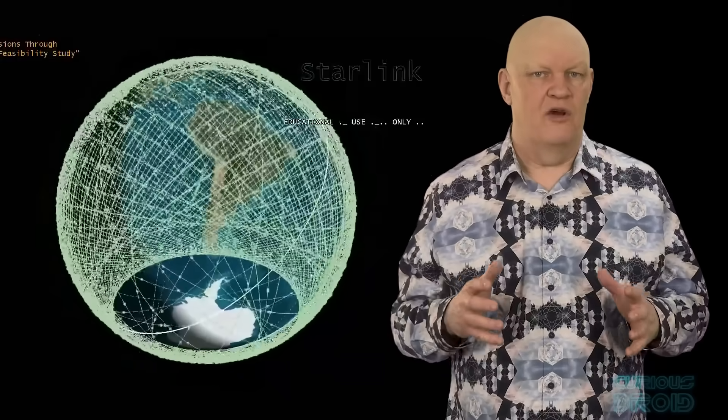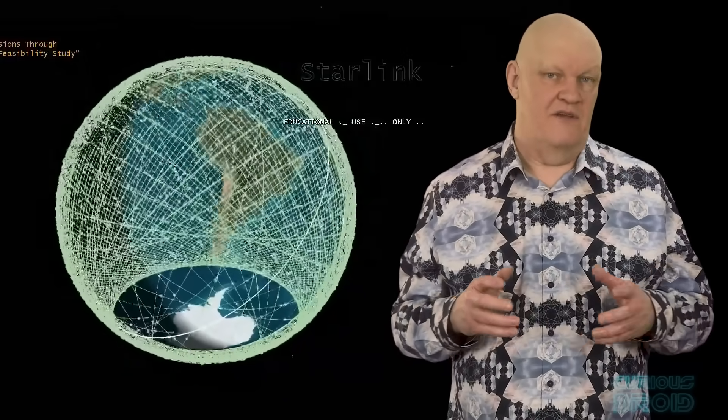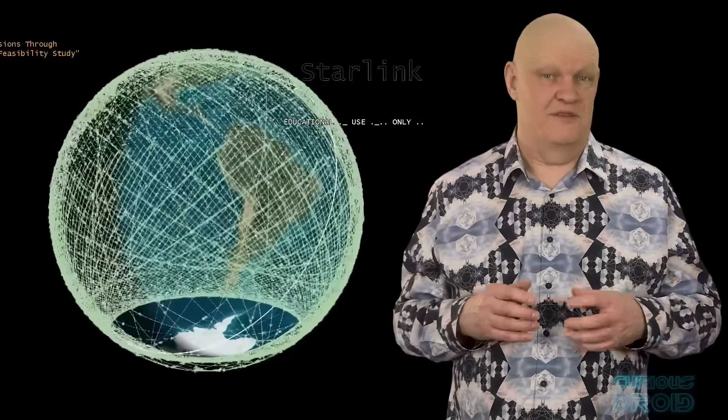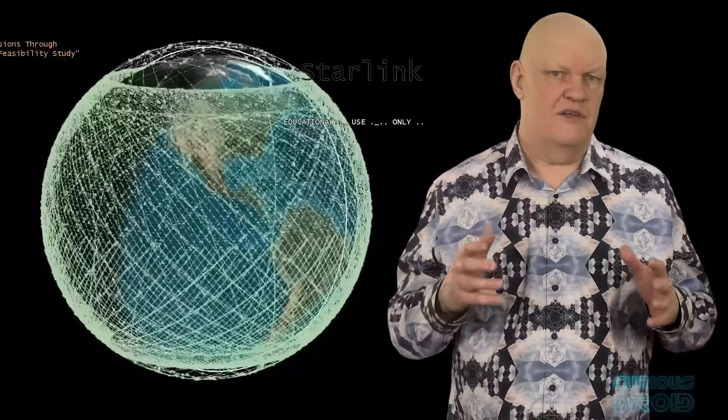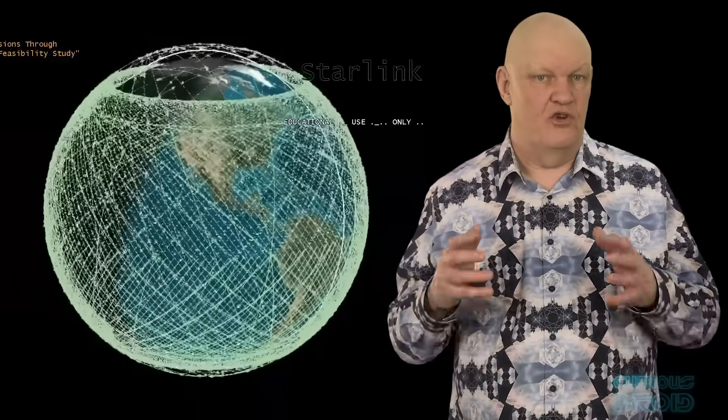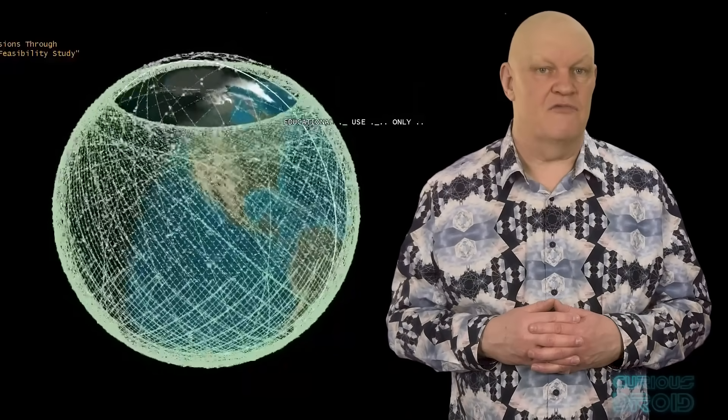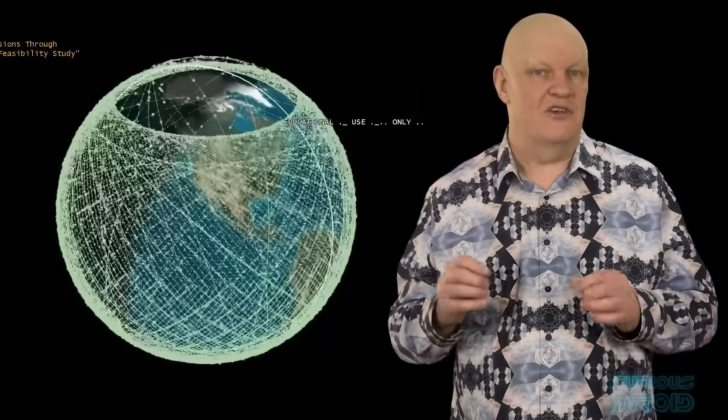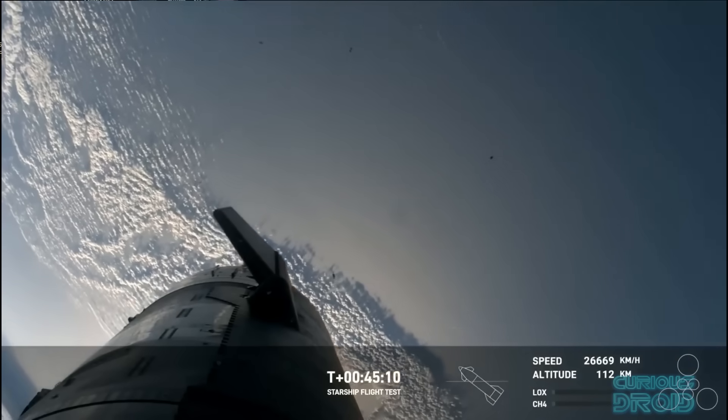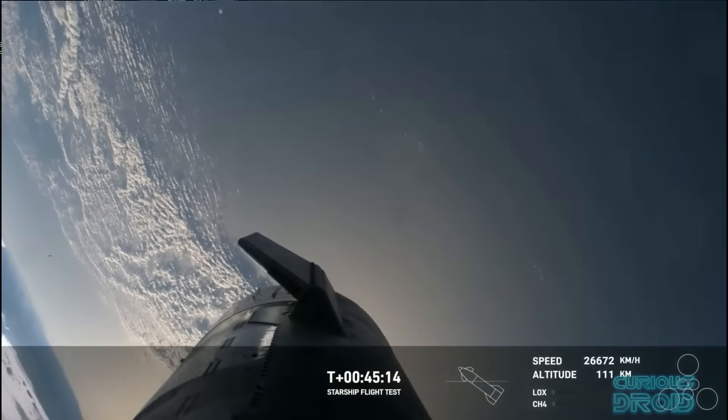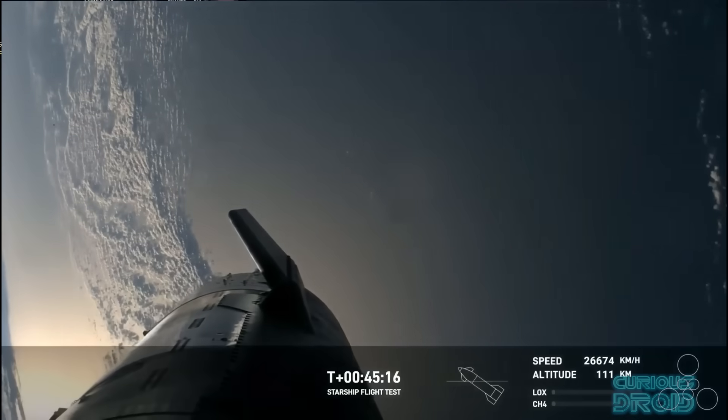These new low earth orbit constellations are providing services like broadband internet connection into the hundreds of megabits per second or mobile phone coverage for areas that are too remote to have normal land-based connections. They also allow for much greater maritime and aviation connectivity. In fact, the videos which are beamed back from the SpaceX test launches of the Starship are sent via Starlink.